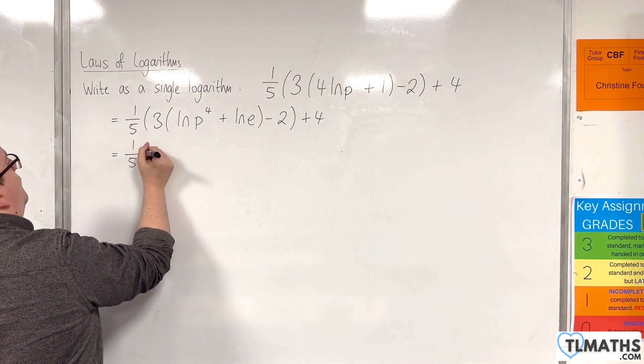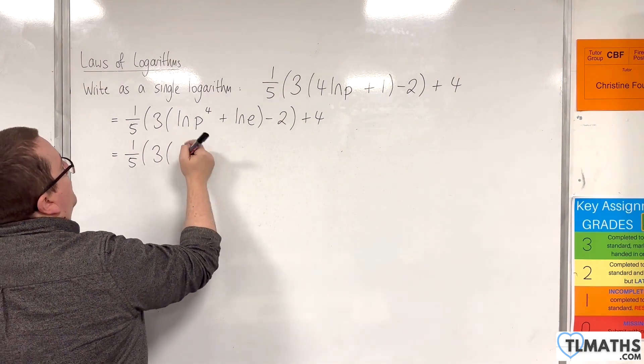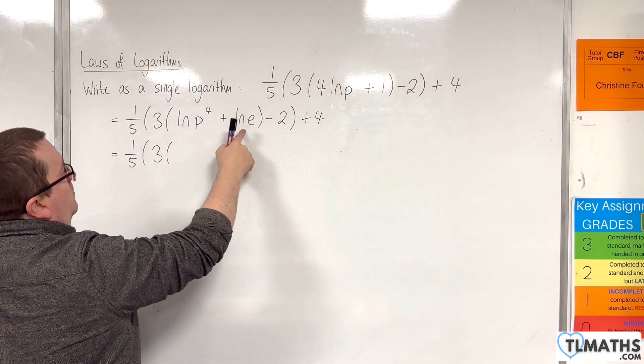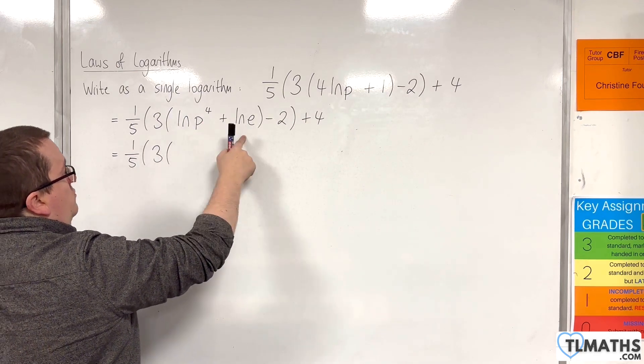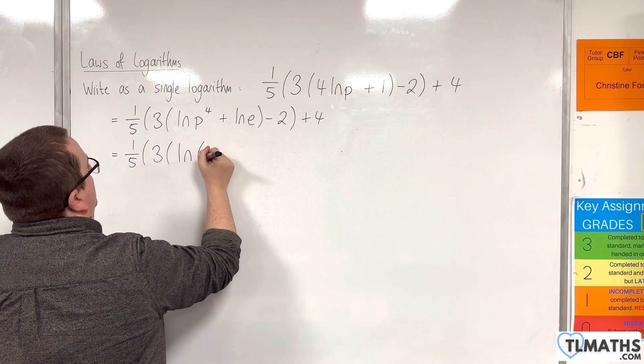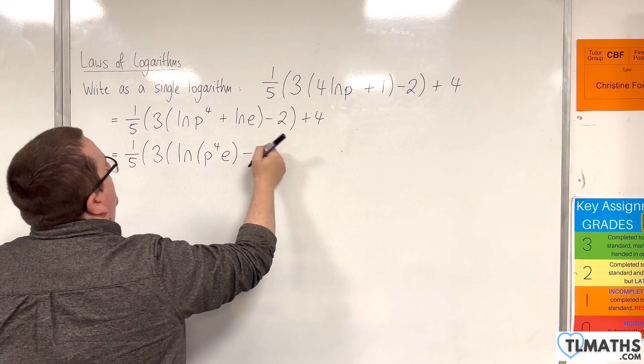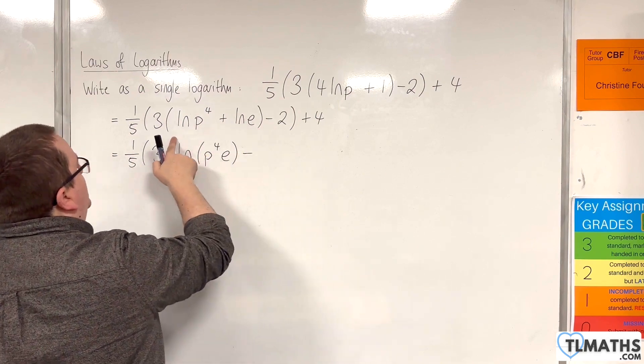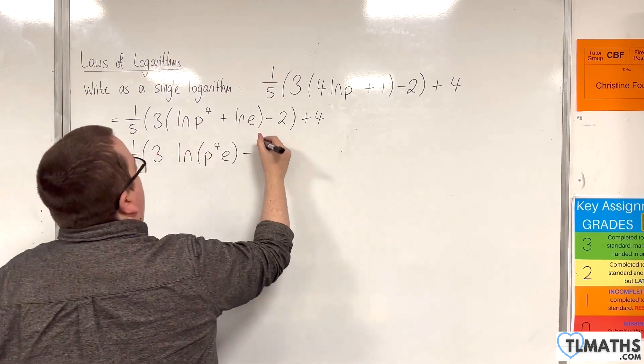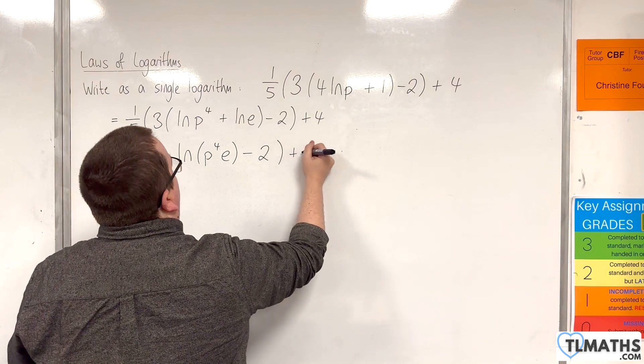So we have 1/5 times 3 lots of - now we've got the natural log of p to the 4 plus the natural log of e. So using the product rule I can write that as the natural log of p to the 4 times e. Now we've got this take away 2, so I can move that bracket, take away 2, and then the plus 4.